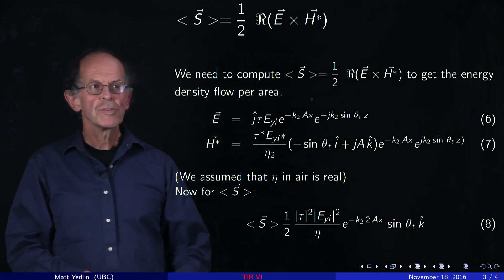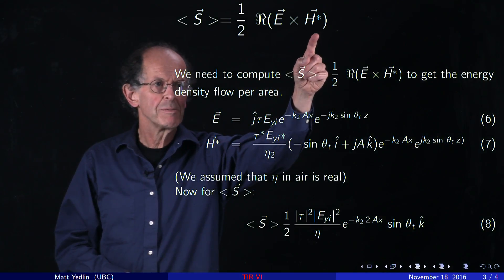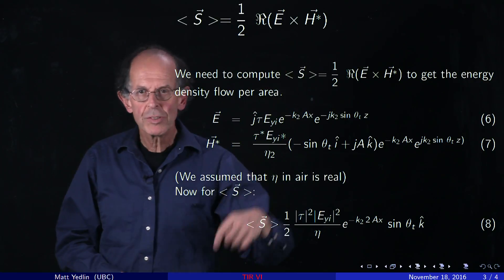For V, we replace it with the electric field, E. And the magnetic field, H, replaces the current.